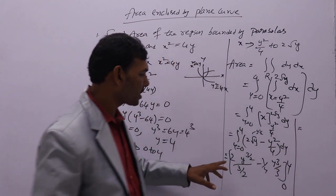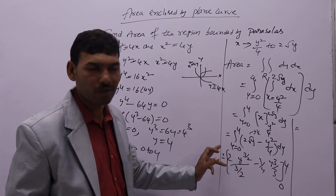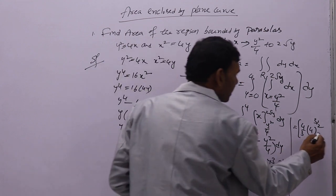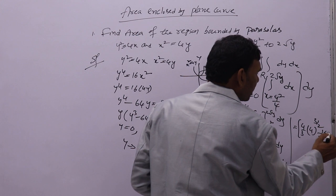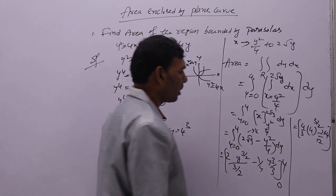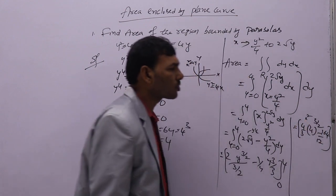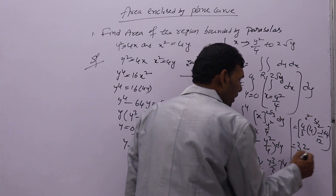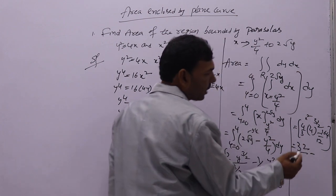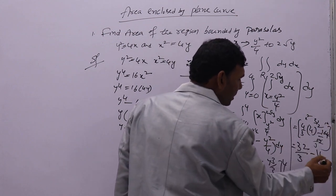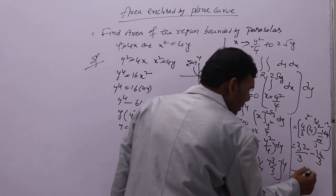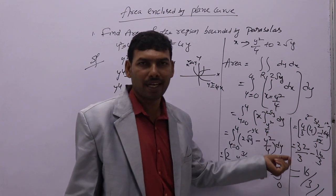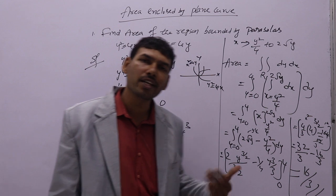Substituting the limits: for 2 root y term, 2 times (2/3) times 4 to the power 3/2 gives 32 by 3. For the y squared by 4 term: (1 by 12) times 4 cubed equals (1 by 12) times 64, which gives 16 by 3. So 32 by 3 minus 16 by 3 equals 16 by 3. The required area is 16 by 3. You can also use a calculator to simplify.